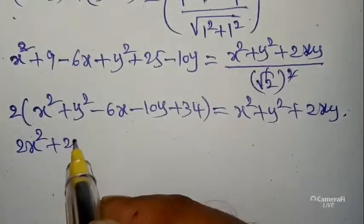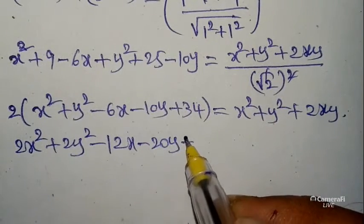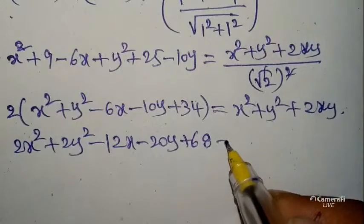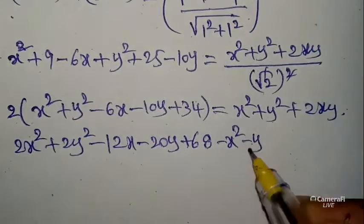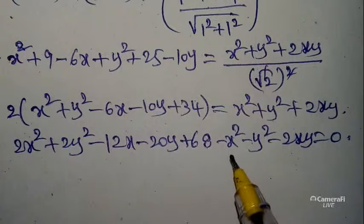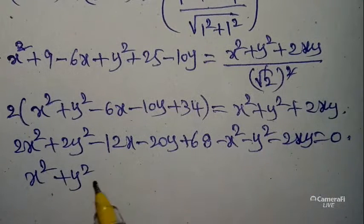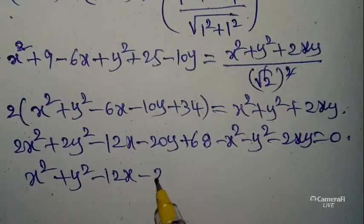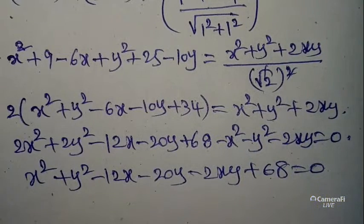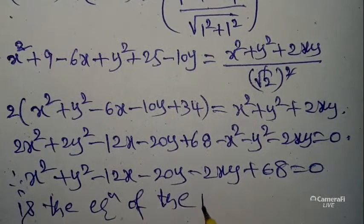Multiplying both sides by 2: 2x² + 2y² − 12x − 20y + 68 = x² + y² + 2xy. Bringing all terms to the left side: x² + y² − 2xy − 12x − 20y + 68 = 0. This is the required equation of the parabola.